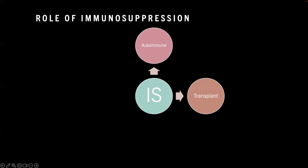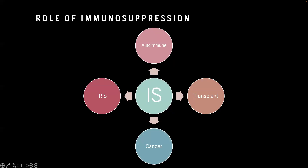Of course, in transplant, where you have transplanted an organ from another individual which is obviously recognized as being foreign, you may need to suppress your immune response to prevent organ rejection. And in some cases where an immune response is damaging — such as an IRIS response or maybe an overactive immune response to sepsis.